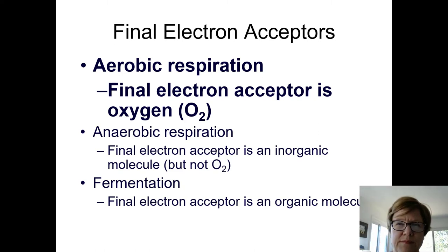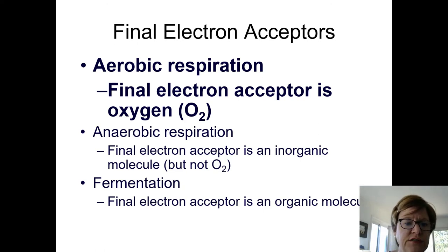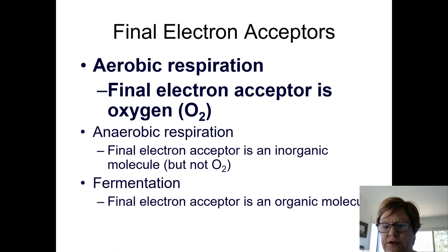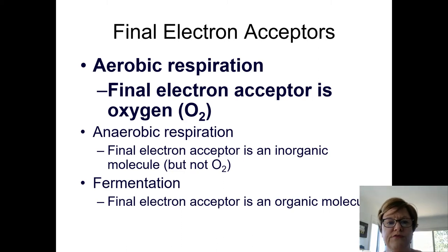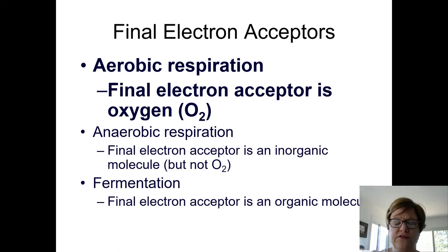Anaerobic respiration is primarily going to be seen in certain special types of bacteria and archaea, which are also prokaryotes. And then there's fermentation — some eukaryotes do fermentation, and humans can do a little bit. In fermentation, you have a final electron acceptor that is an organic molecule, meaning a carbon-based compound. That's the distinction between these three terms: it really has to do with the details of the final electron acceptor, but all of them involve redox reactions where electrons are passed along until you get to the final electron acceptor.